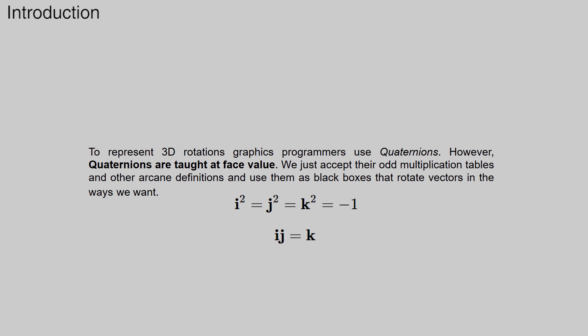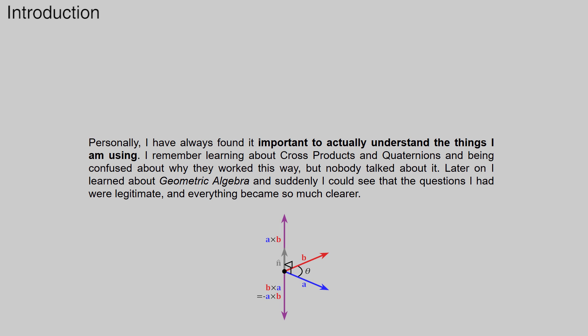Why does i² equal j² equal k² equals negative 1 and i times j equals k? Why do we take a vector and upgrade it to an imaginary vector in order to transform it? Personally, I've always found it important to actually understand the things I'm using.